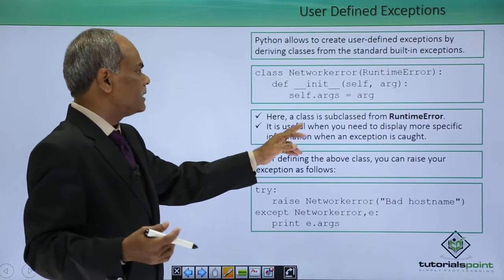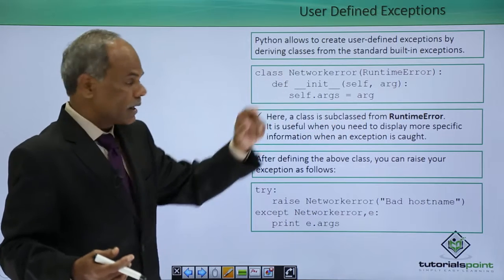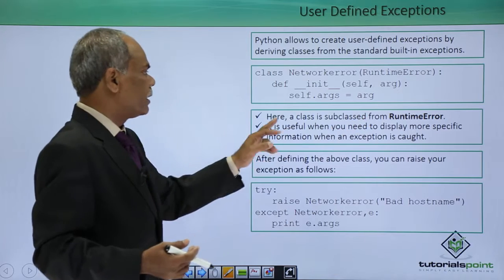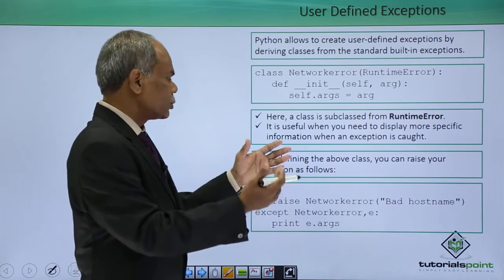Here, the class is subclassed or derived from the RuntimeError class. This is useful when you need to display more specific information when the exception is caught.